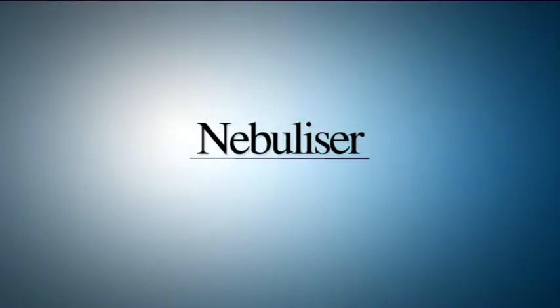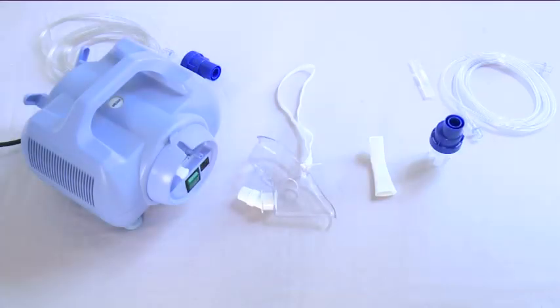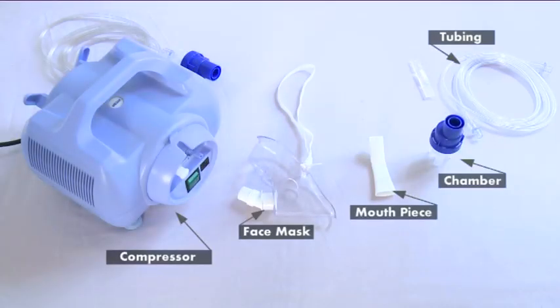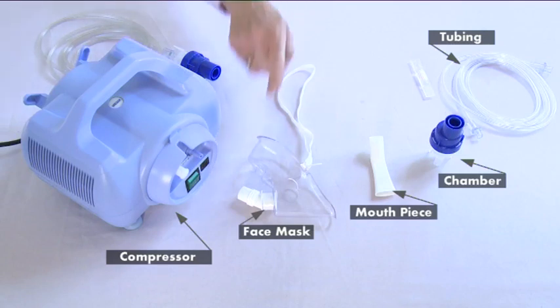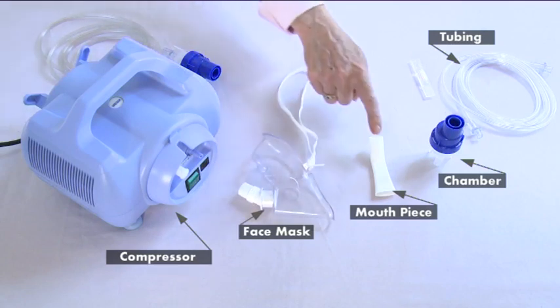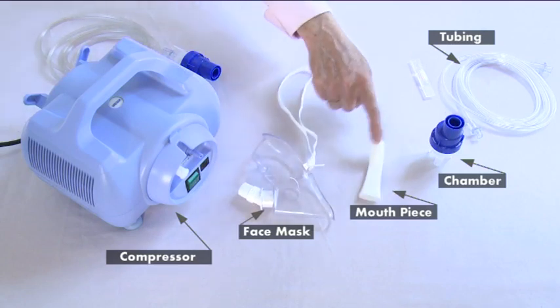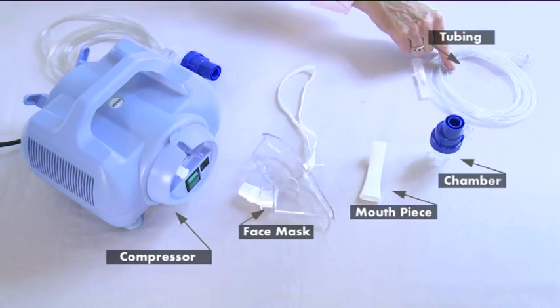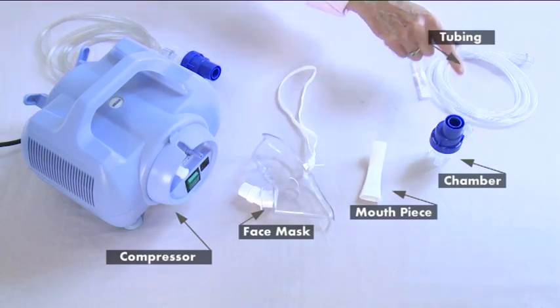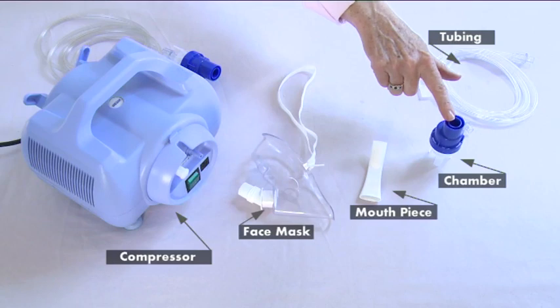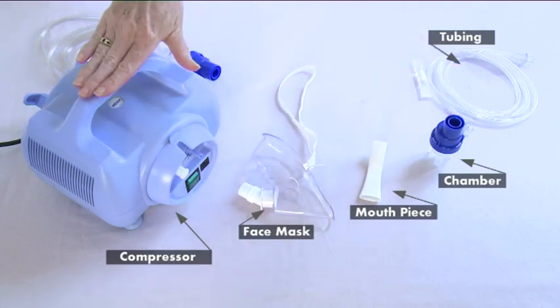Nebulisers. There are four parts to a nebuliser: the face mask or mouthpiece, the tubing, the nebuliser chamber, and the compressor.